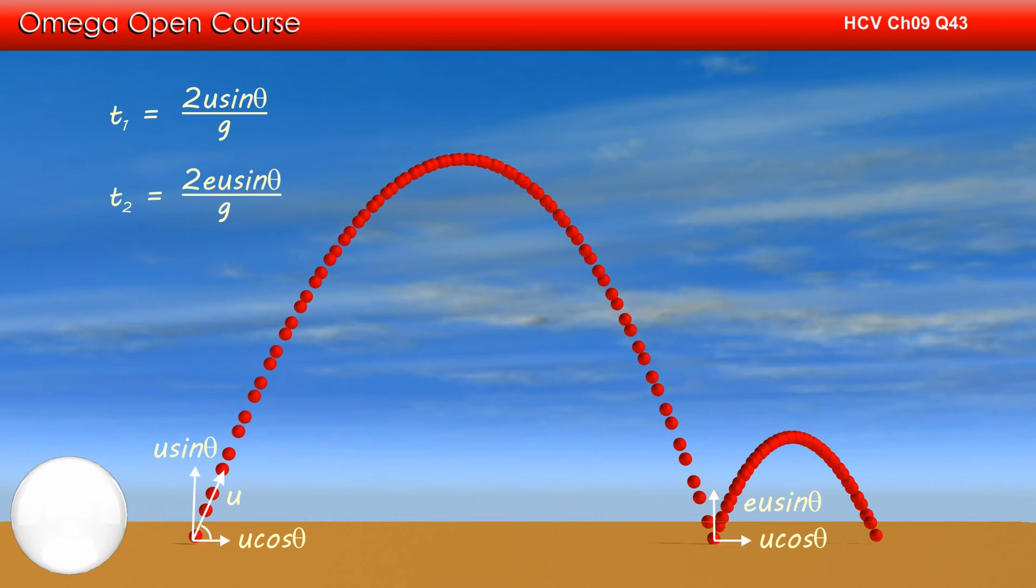Therefore, the time taken by the projectile between the first and second collision is 2e u sin theta divided by g.